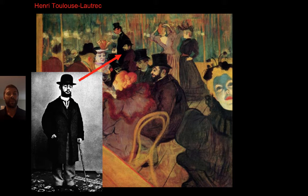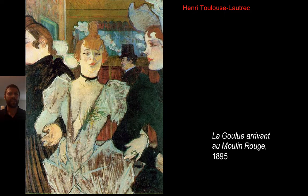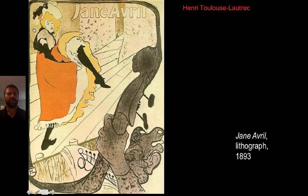The post-impressionists start to use their imagination to exploit the properties of color, but not only color — also form as well. Notice also that the images are becoming a bit more abstract. In some cases the figures are almost two-dimensional. There isn't this interest in painting the form as we see it. And this is going to be important for that movement toward abstractionism.